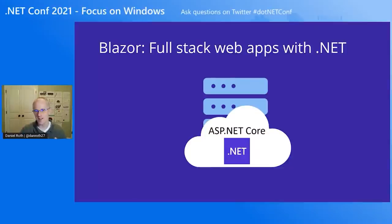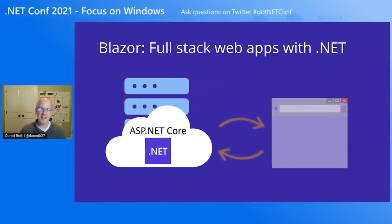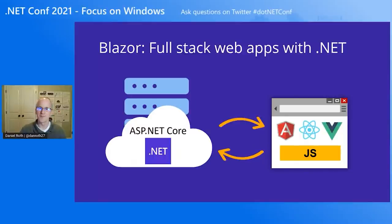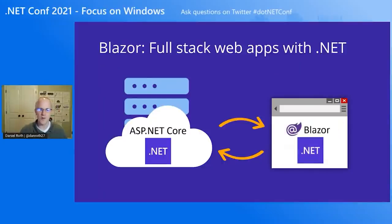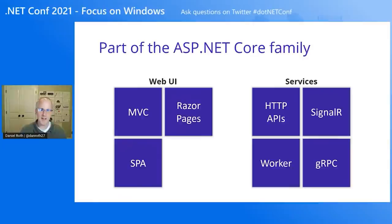.NET has had great support for building server-rendered web apps for a long time with ASP.NET and ASP.NET Core, but previously if you wanted to do anything in the browser, that meant writing JavaScript. Blazor enables you to add client-side functionality and interactivity to your ASP.NET Core web apps using just .NET — no JavaScript required. Blazor is based purely on open web standards and works in any modern web browser, no browser plugins required. Blazor is part of ASP.NET Core, your modern web framework for .NET.